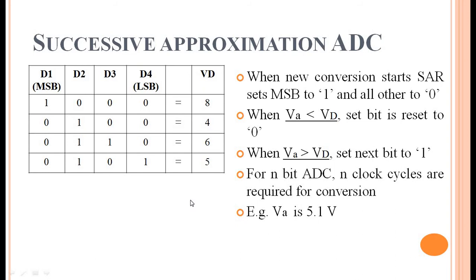Now VA = 5.1V is less than VD = 6V, so the set bit is reset to 0 and the next bit is set to 1. The binary value becomes 0101 — that is, 2^2 + 2^0 = 4 + 1 = 5 volts. All bits have now been processed, so the successive approximation ADC stops here, giving 5 volts, which is the closest value to 5.1 volts achievable with 4 bits.